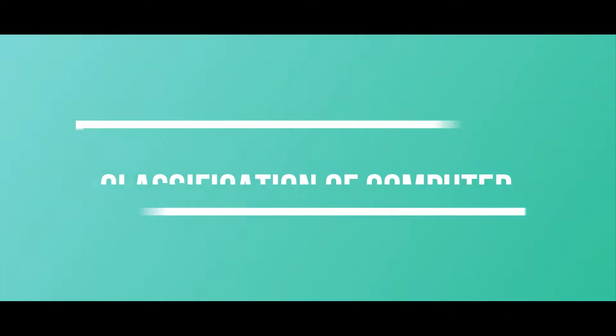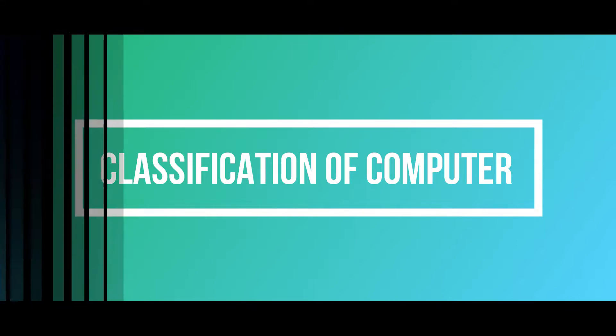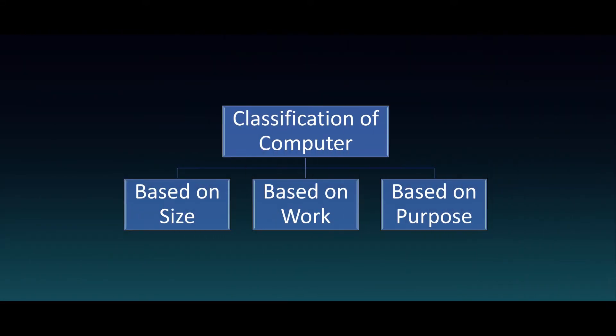In this section, we will discuss the classification of the computer. Computers are mainly classified into three types: 1. Based on size. 2. Based on work. 3. Based on purpose.